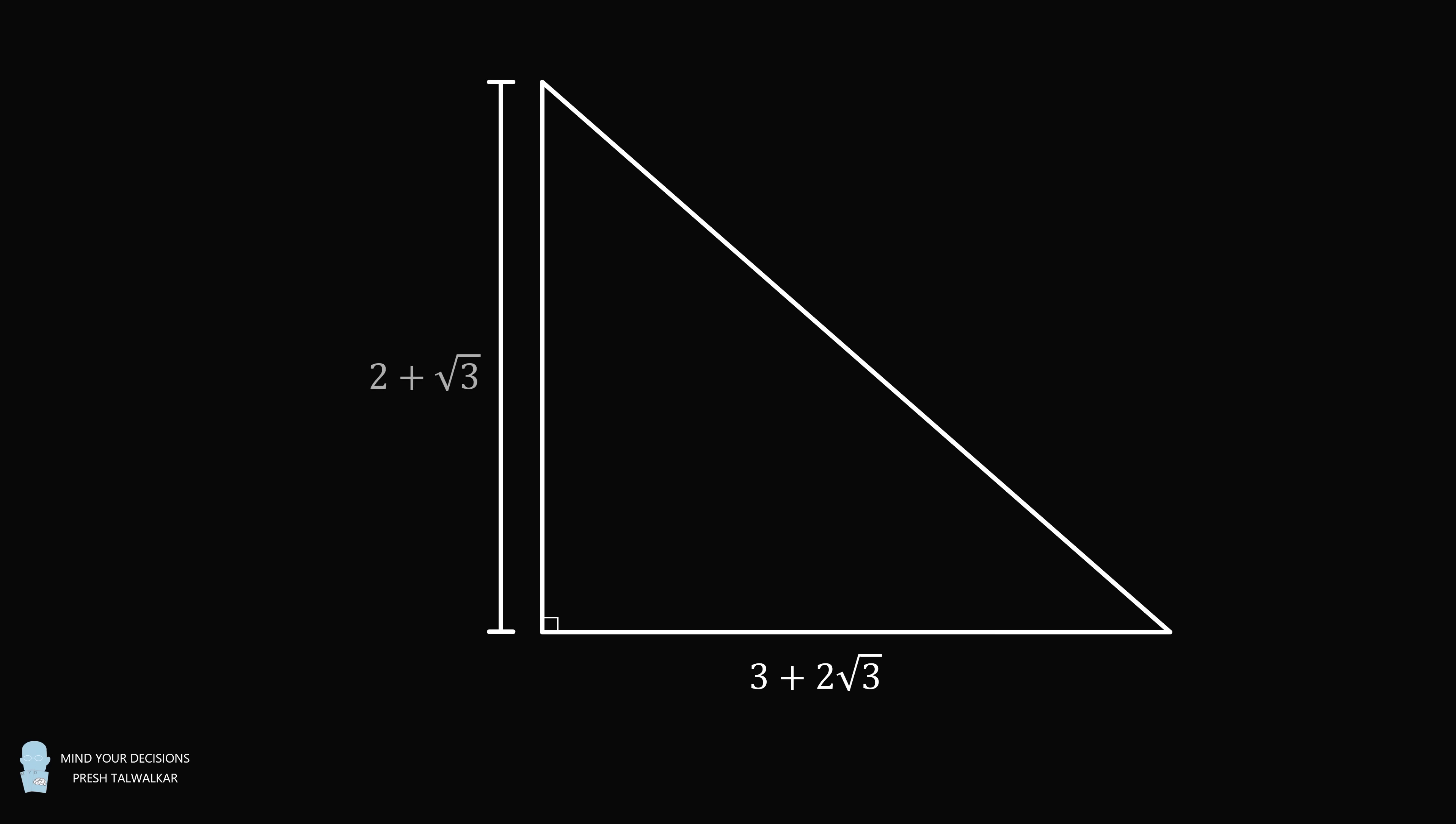Hey, this is Presh Walker. Here's a fun geometry problem. We have a right triangle with a longer leg equal to 3 plus 2 root 3, and a shorter leg that has a length equal to 2 plus root 3. Inscribe a semicircle in this triangle with the following properties: its diameter is along the shorter leg of the right triangle, one endpoint is at the right angle, and the semicircle is tangent to the hypotenuse.